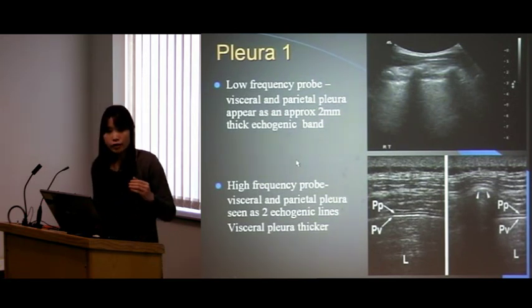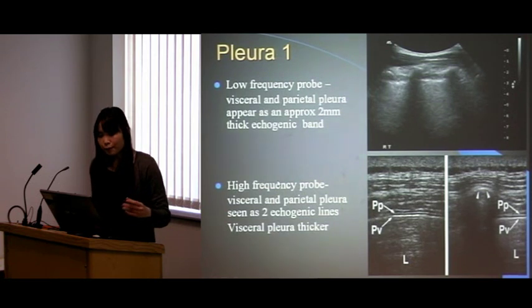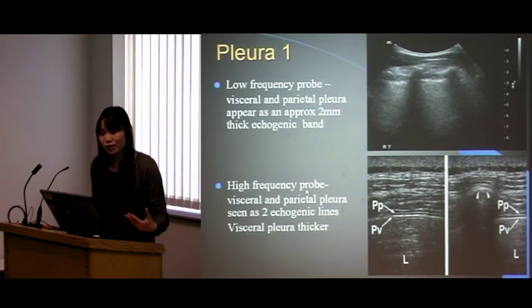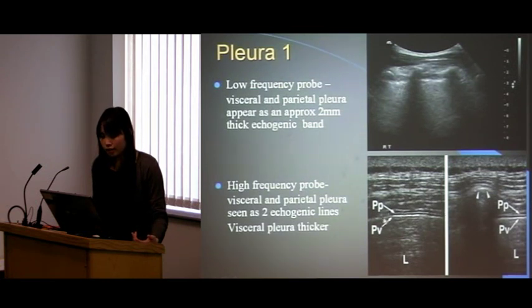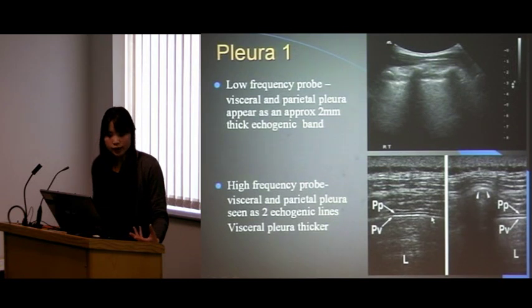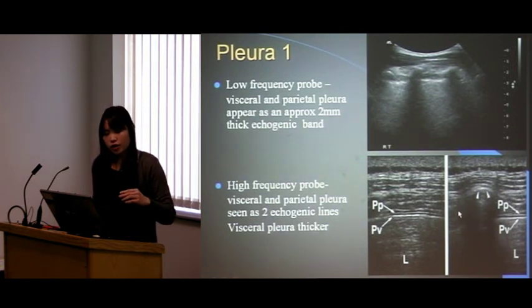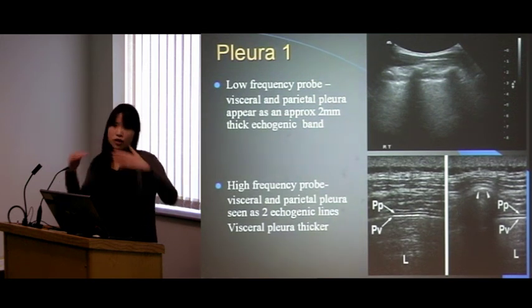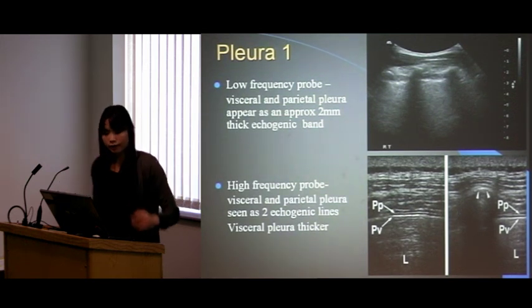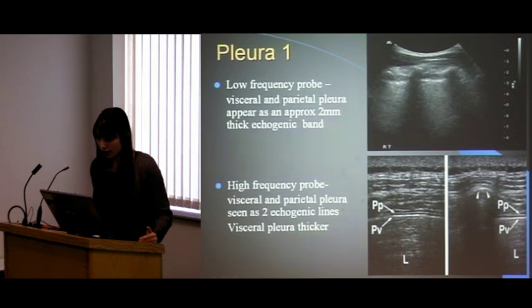With your flat high frequency probe, if you're lucky you can differentiate the pleura into the visceral and parietal — parietal on the outer side, visceral on the inner side. The visceral is normally slightly thicker. There'll be two separate echogenic lines, and if the patient cooperates you can see it sliding in and out.